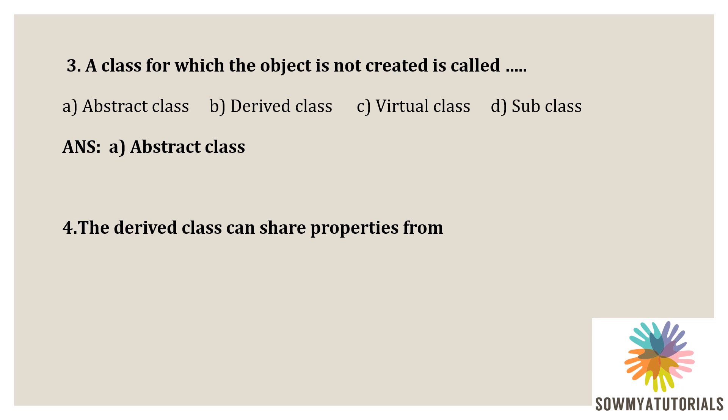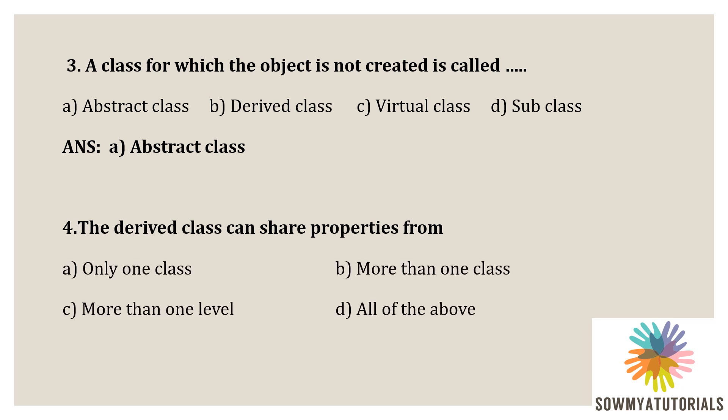Next question: the derived class can share properties from — option A: only one class, option B: more than one class, option C: more than one level, option D: all of the above. The correct answer is all of the above. Only one class refers to single inheritance; more than one class refers to multiple inheritance (more than one base class, one derived class); more than one level refers to multi-level inheritance. So the derived class can share properties from all of the above.